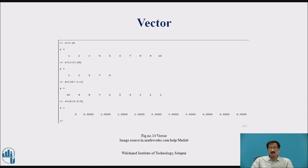y = 10:-1:1 — the result of this command will give the values from 10 to 1, that is 10, 9, 8, 7, 6, 5, 4, 3, 2, 1, because the difference specified is minus 1.